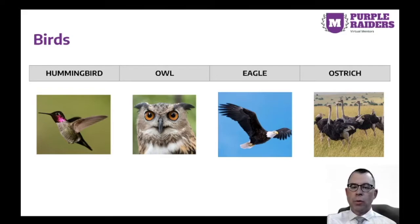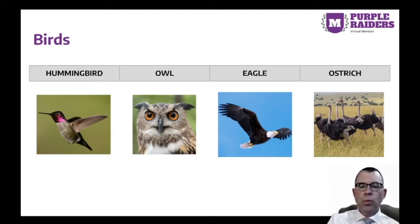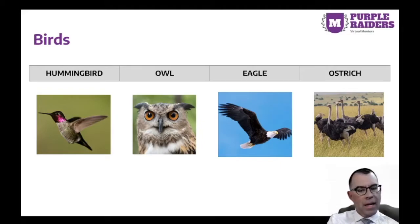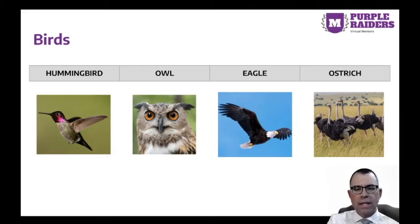The next group of animals with backbones are called birds. Birds are the only animals with feathers. They have two wings and two legs. Not all birds can fly, though. Examples of birds include hummingbirds, owls, eagles, and ostriches.